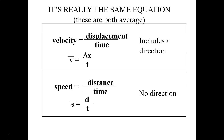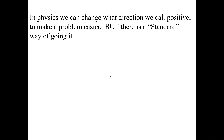Speed is distance over time: S equals D over T. The bar over it means average, so this equation gives average speed. The equation for average velocity is displacement over time — V-bar equals Delta X over T. The difference is that velocity uses displacement and speed uses distance. Velocity has a direction and speed does not — speed is how fast, velocity is how fast and in which way.